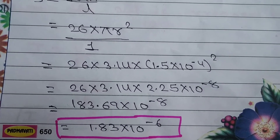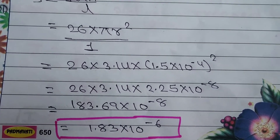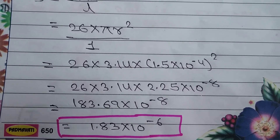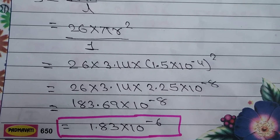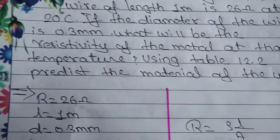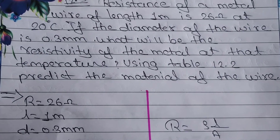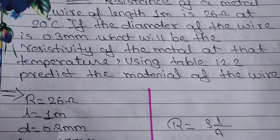Now, the question also asks us to predict the material of the metal. For this, we need to refer to table number 12.2 and match the calculated resistivity value to identify the material.